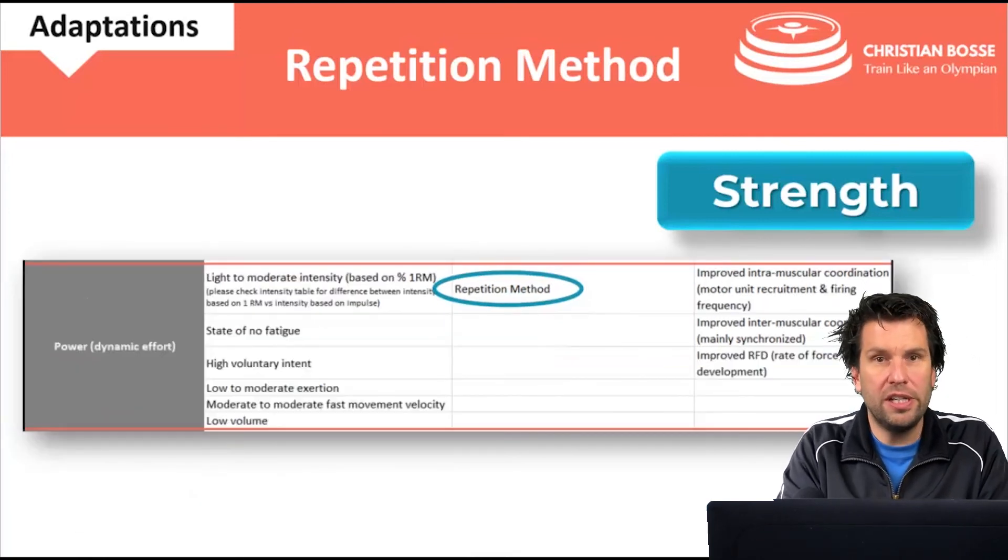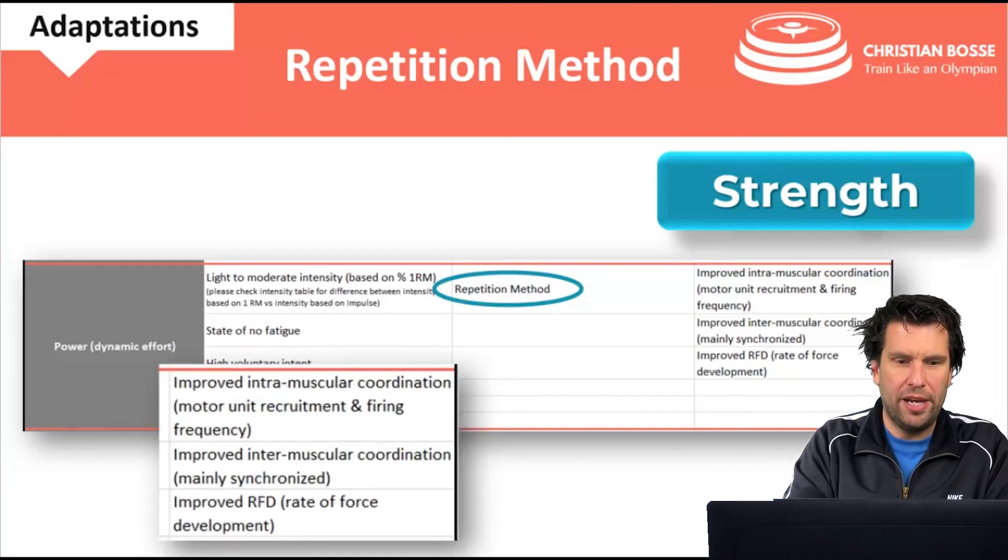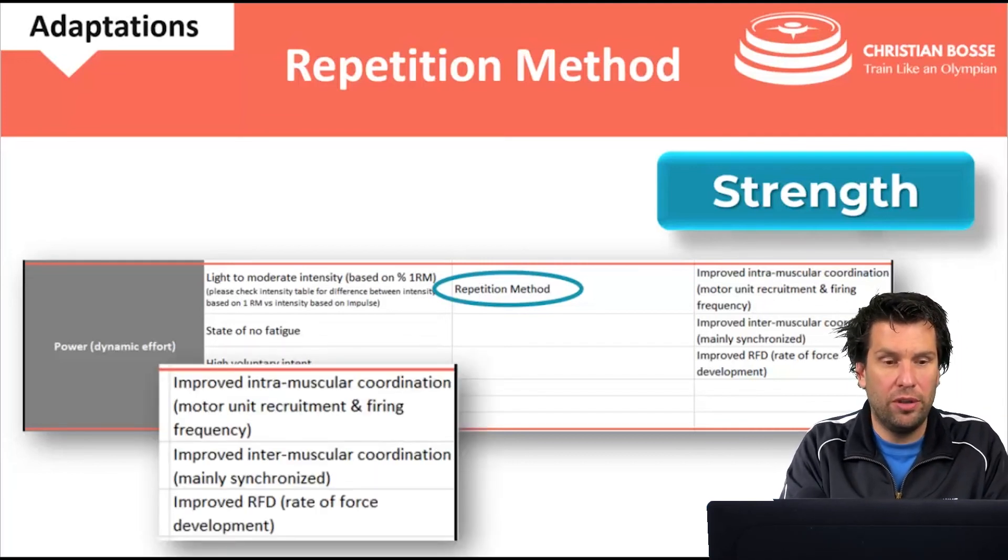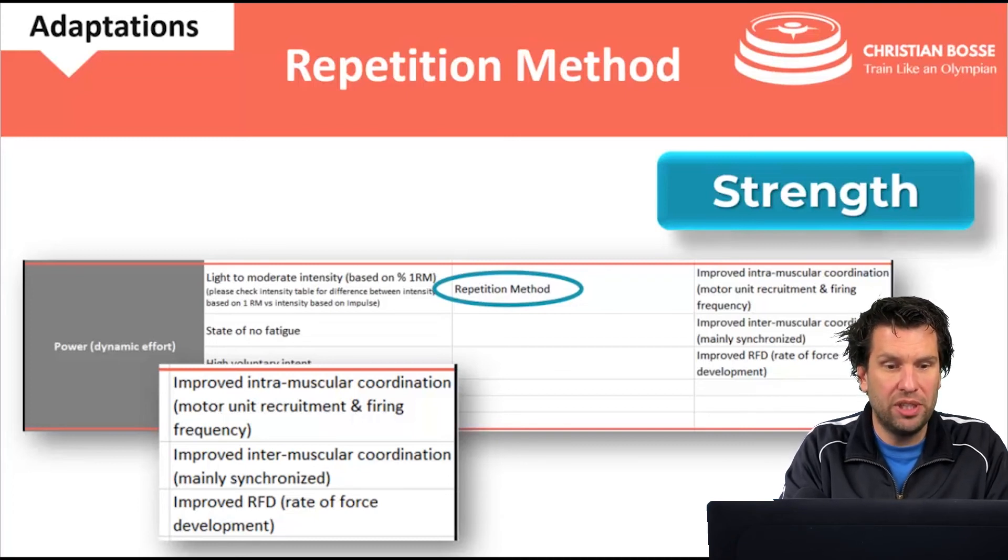Another example, if we work on power development. The repetition method might be our method of choice, should be our method of choice. And the adaptations here for the dynamic effort, which is power training at higher intensities, 50 to 70% of the 1RM for example. And the adaptations again, improved intramuscular coordination, recruitment of motor units as well as the firing frequency, also known as discharge rate. And improved intermuscular coordination, the synchronization. And an improved rate of force development.